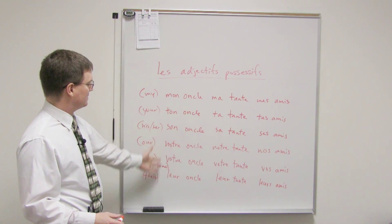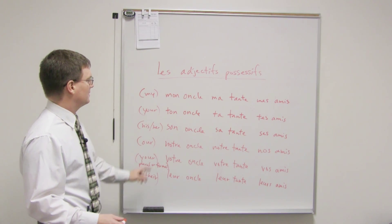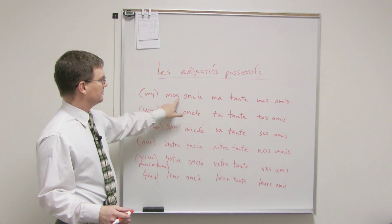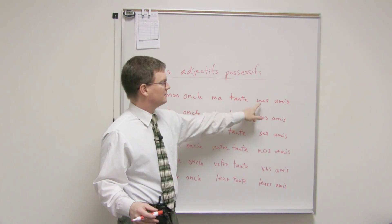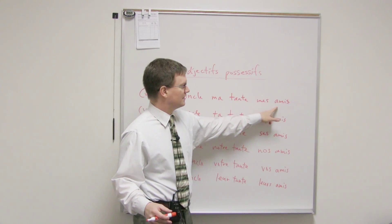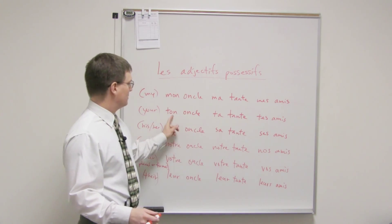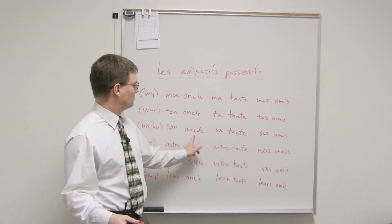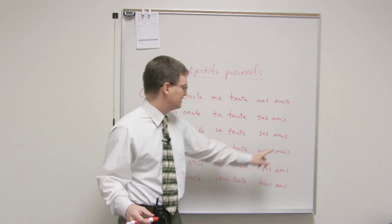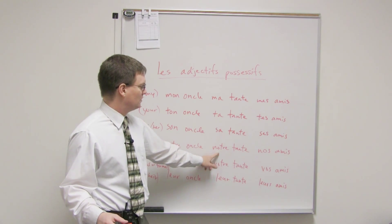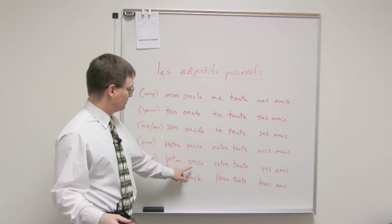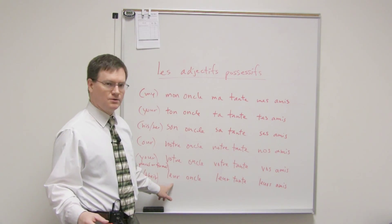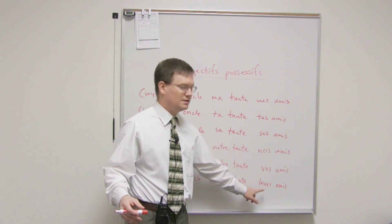So these are the possessive adjectives in French. I just want to pronounce these for you. Mon oncle, ma tante, mes amis. Notice there's kind of this liaison if there's a vowel here. Ton oncle, ta tante, tes amis. Son oncle, sa tante, ses amis. Notre oncle, notre tante, nos amis. Votre oncle, votre tante, vos amis. Leur oncle, leur tante, leurs amis.